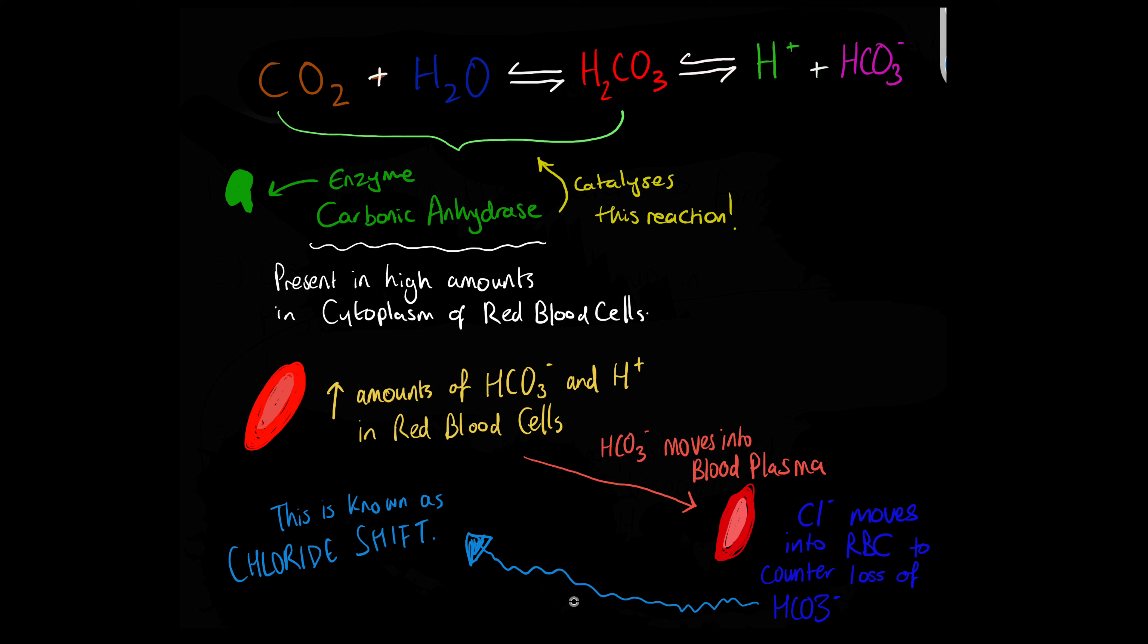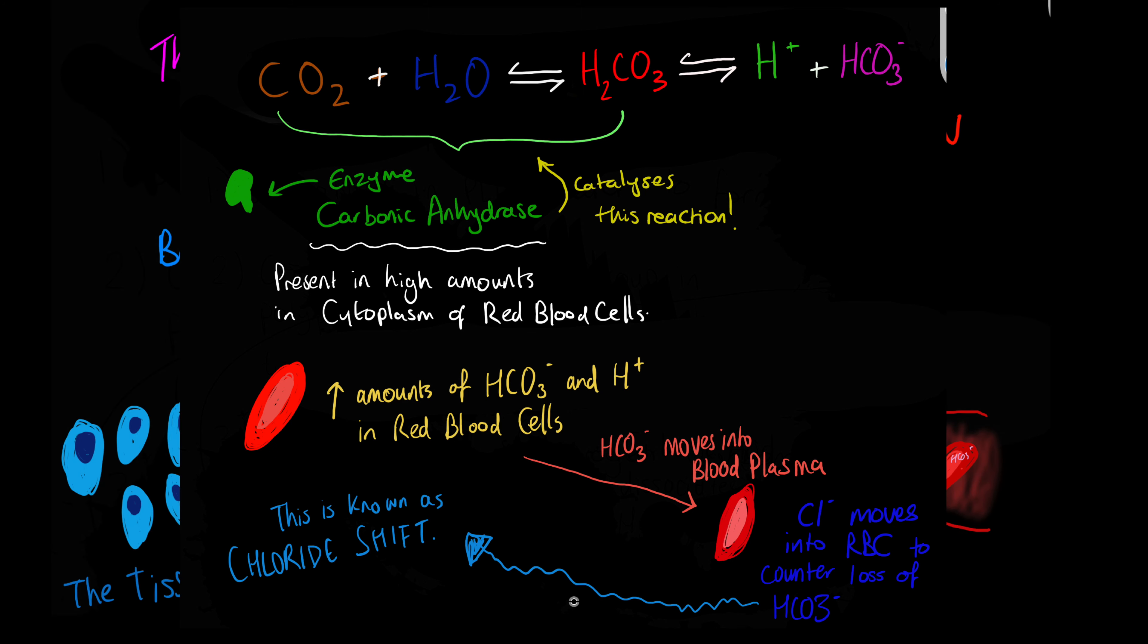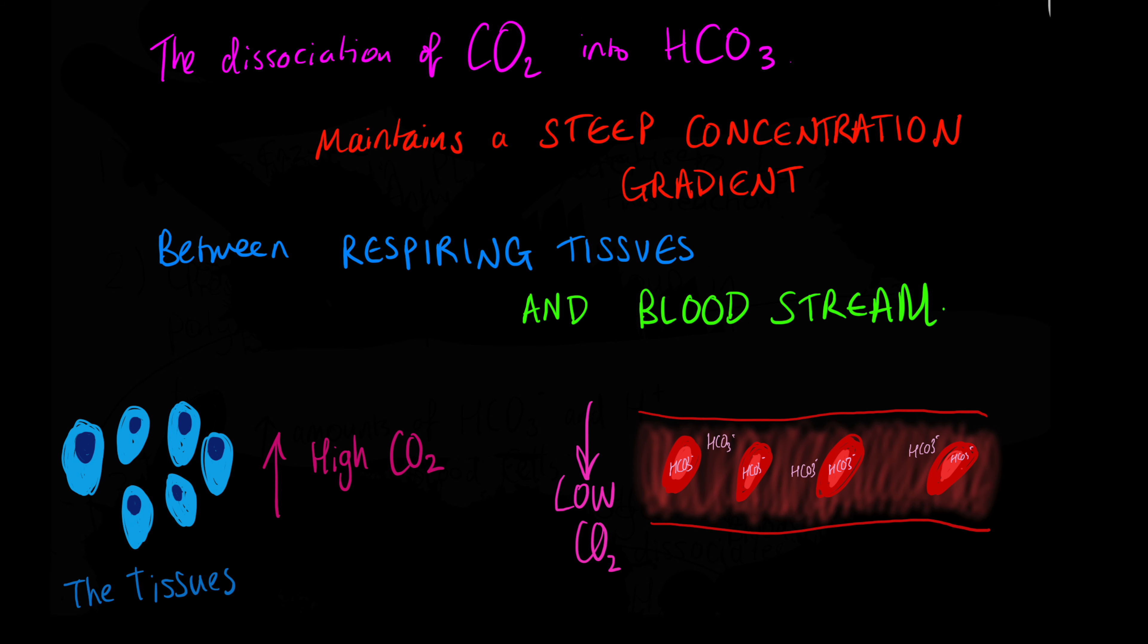This is known as the chloride shift. The effect of removing the carbon dioxide and converting it into hydrogen carbonate ions is that red blood cells maintain a steep concentration gradient for carbon dioxide to diffuse from respiring tissues into the erythrocytes.